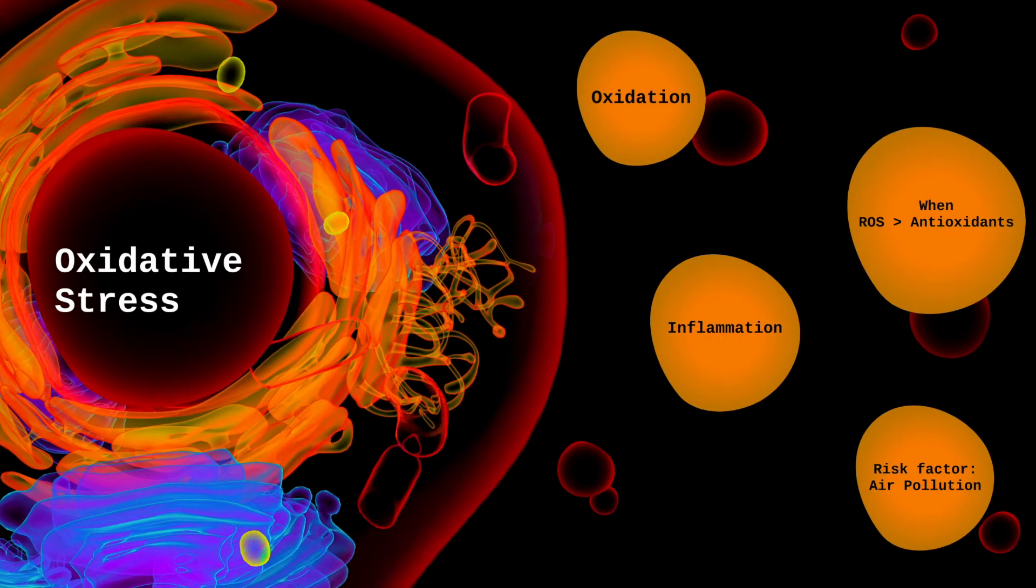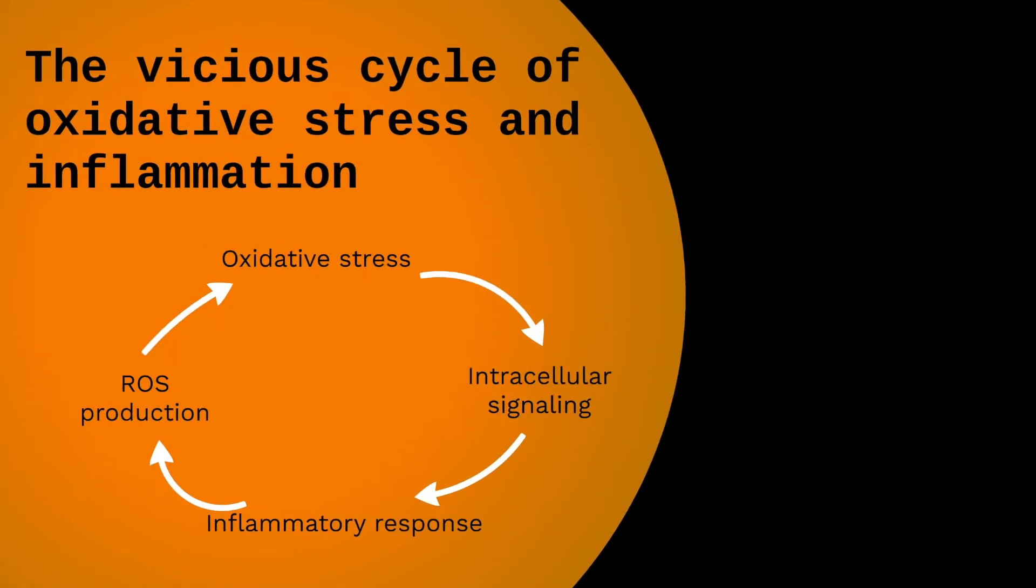Oxidative stress is also tightly interrelated with inflammation. Oxidation processes start intracellular signaling that triggers an inflammatory response. And in order to eliminate pathogens in the inflammatory area, inflammatory cells produce more ROS that act as signaling molecules and inflammatory mediators leading to oxidative stress.